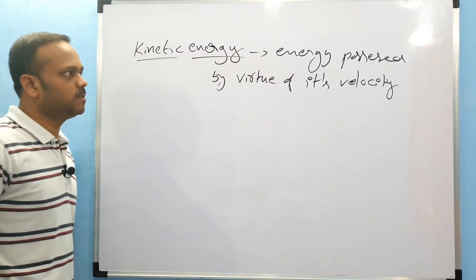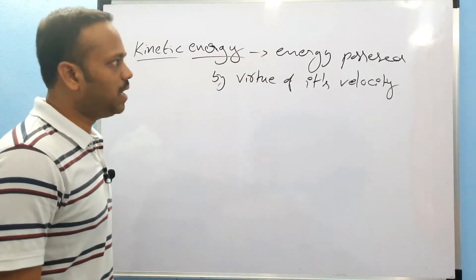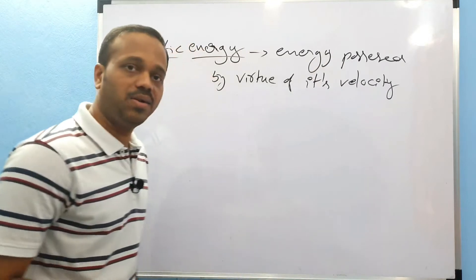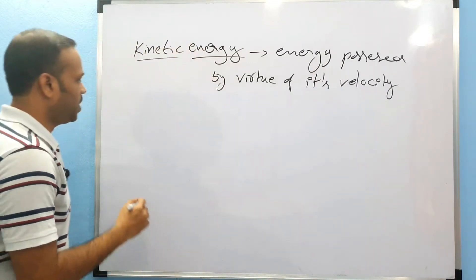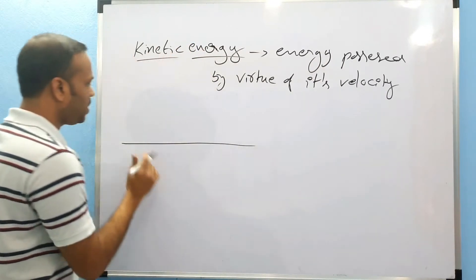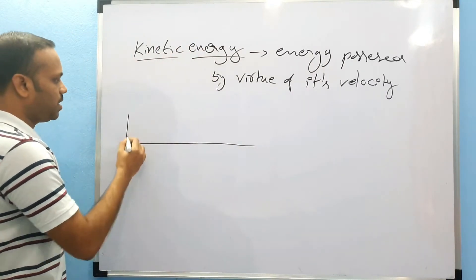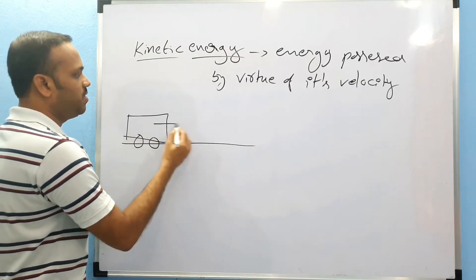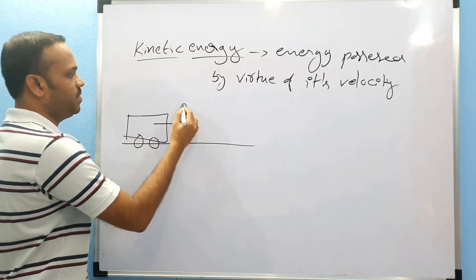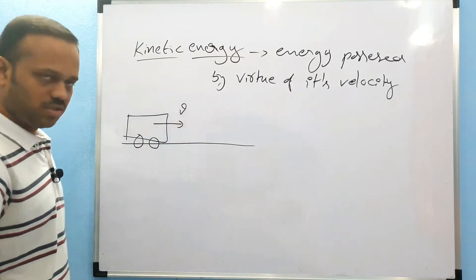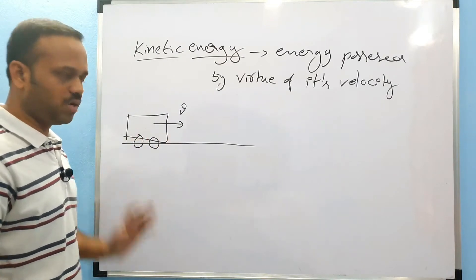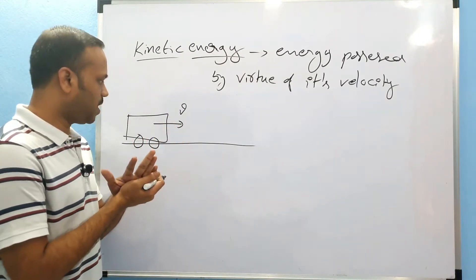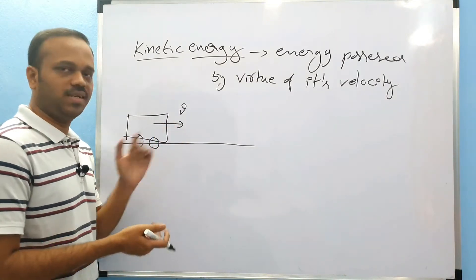Then how do we calculate it? For example, this is a car coming with some velocity V.